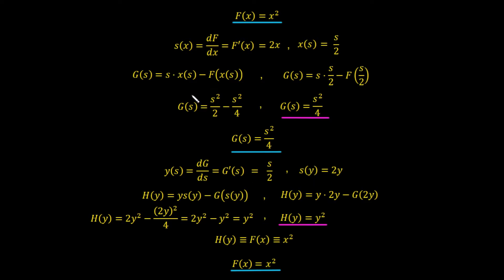We rewrite the inverse Legendre transform as h(y) = y·s(y) − g(s(y)). Substituting s(y) = 2y, we get h(y) = y·(2y) − (2y)²/4 = 2y² − 4y²/4 = 2y² − y² = y². So h(y) = y², which is exactly our original f(x) = x².